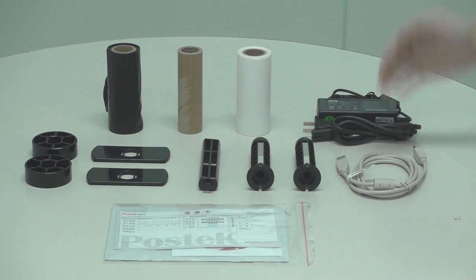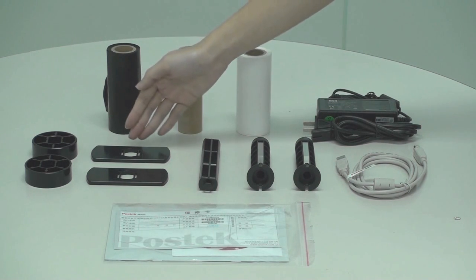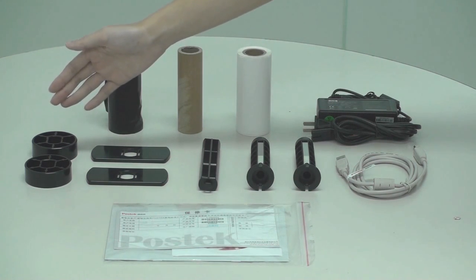Also, you'll find one power adapter along with the interface cable, two ribbon spindles, one media spindle, two media roll guides, and two media core adapters.